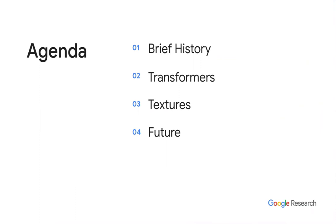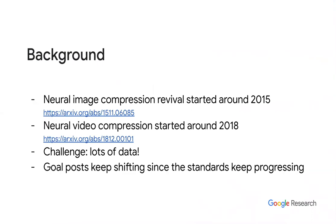We're going to talk about a few things today. I'm going to start with a very brief history of neural compression. Neural compression technology was around in the late 80s and early 90s — there are a couple of papers — but most of the work we could say is neural compression, and work on neural video compression, goes back to around 2008. It wasn't able to happen mostly because of huge computational constraints.